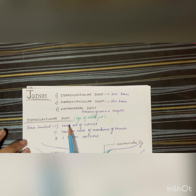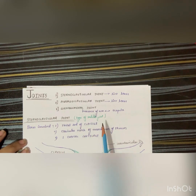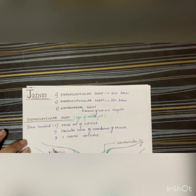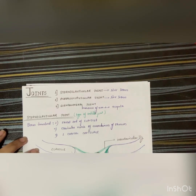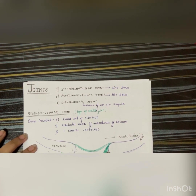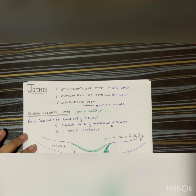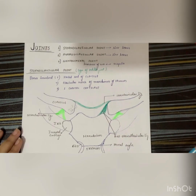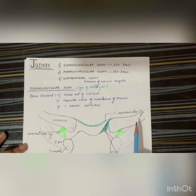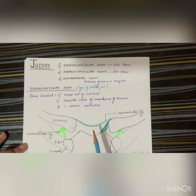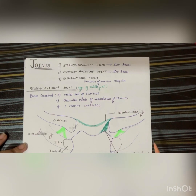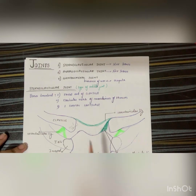Coming to the sternoclavicular joint: it is a type of saddle joint. It involves the sternal end of the clavicle, the clavicular notch of the manubrium, and the first costal cartilage. The ligaments involved are the anterior and posterior sternoclavicular ligament, the costoclavicular ligament, and the interclavicular ligament.